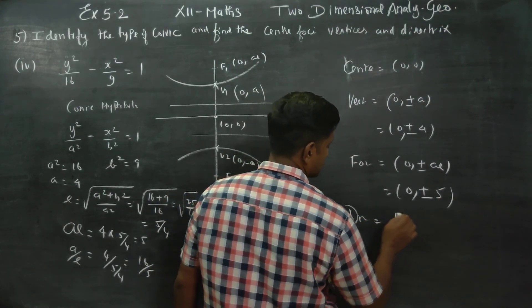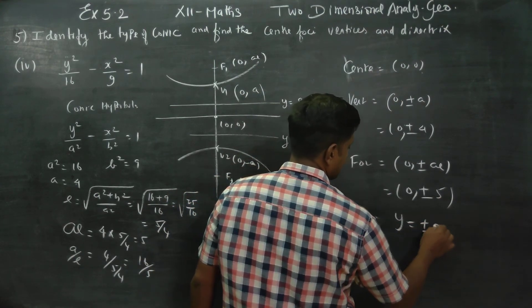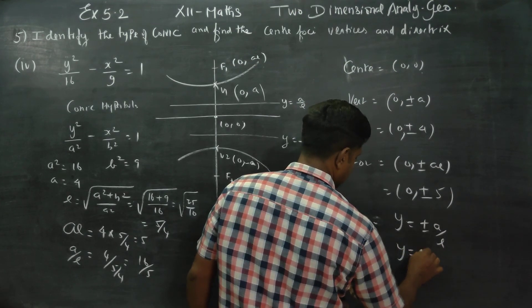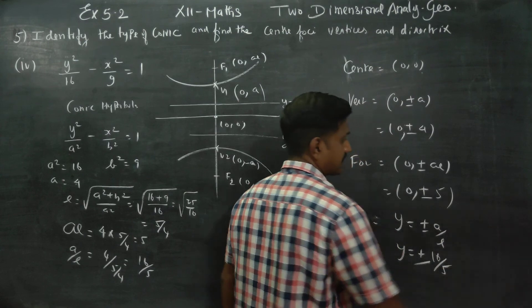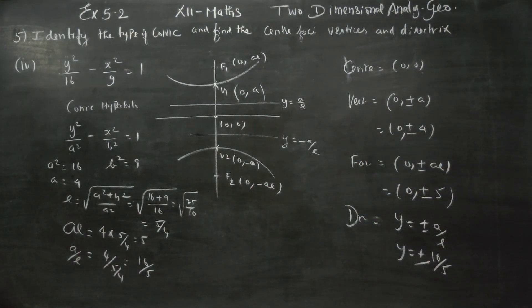Directrix formula: y is equal to plus or minus a by e. 16 by 5 is my directrix. These are the answers for this sum. Thank you.